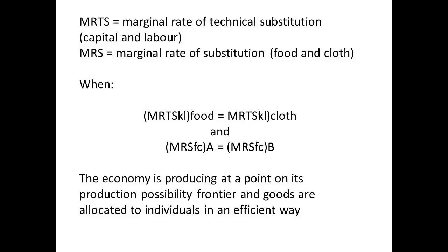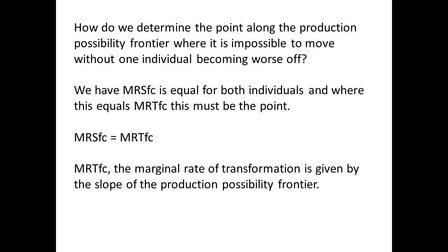The economy is producing at a point along its production possibility frontier. Where is this point along the production possibility frontier where it is impossible to move without one individual becoming worse off? It is where the marginal rate of substitution for both individuals must be equal, and the marginal rate of transformation for both individuals must be equal.